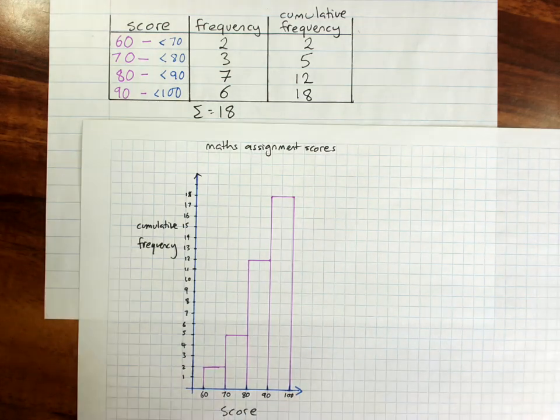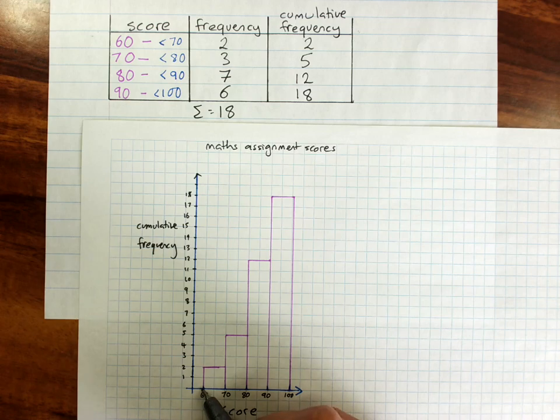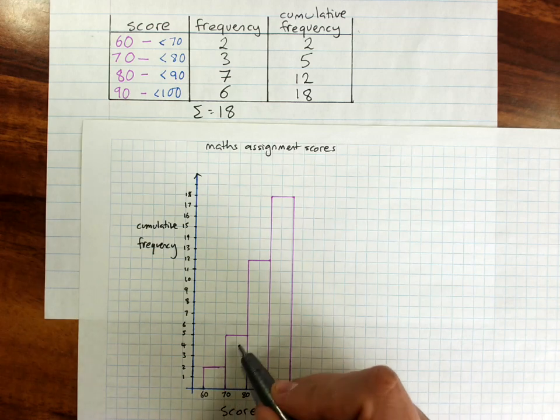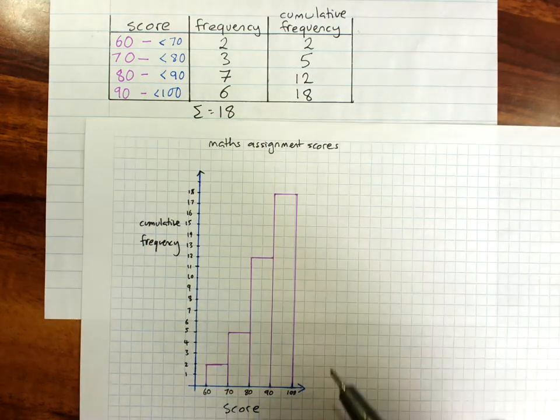The ogive, or polygon, then goes from bottom left to top right, and then to top right again of each column.